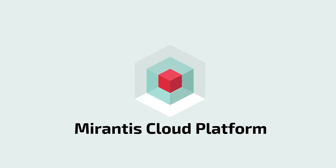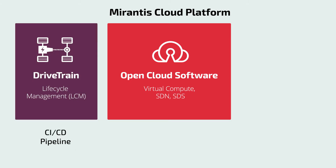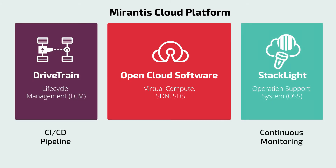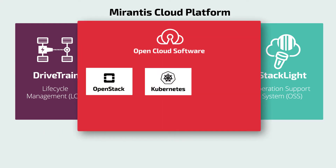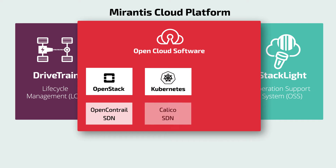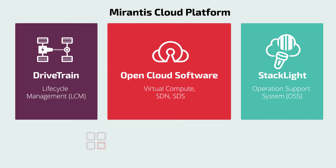The Mirantis Cloud Platform represents a dramatic evolution of open cloud software, supporting VMs, containers, and bare metal, delivered by a CI/CD pipeline and featuring continuous monitoring for strict SLA compliance. MCP's open cloud core includes hardened OpenStack and Kubernetes over OpenContrail and Calico SDN with CEF software-defined storage, orchestrating VM-based, container-based, or bare metal workloads using the rich APIs of these fast-evolving open source frameworks.